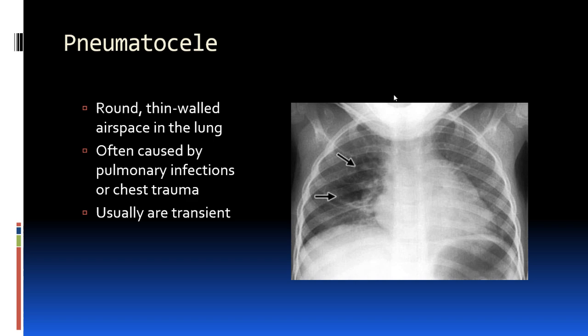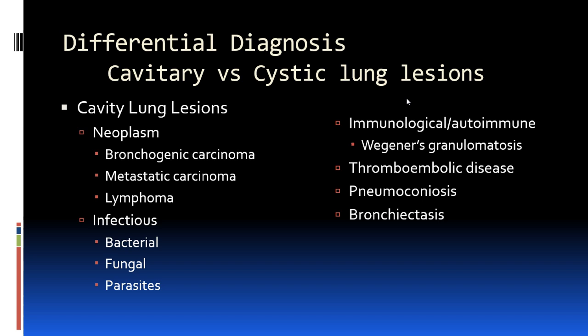Pneumatoceles are thin-walled air spaces in the lung. By definition they are often caused by pulmonary infection or trauma, and they are usually transient — after the underlying cause is treated, they should resolve in the long term.